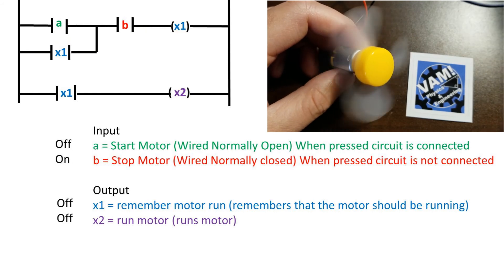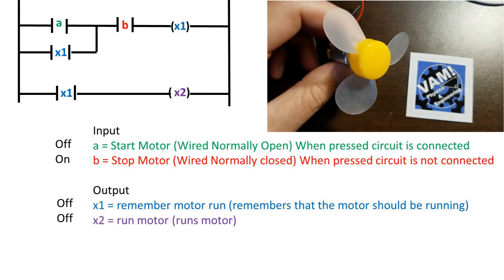To break the seal circuit, we can turn on the stop button, which is a normally connected button, to break the circuit. Now the remember bit is off, and the motor is off.